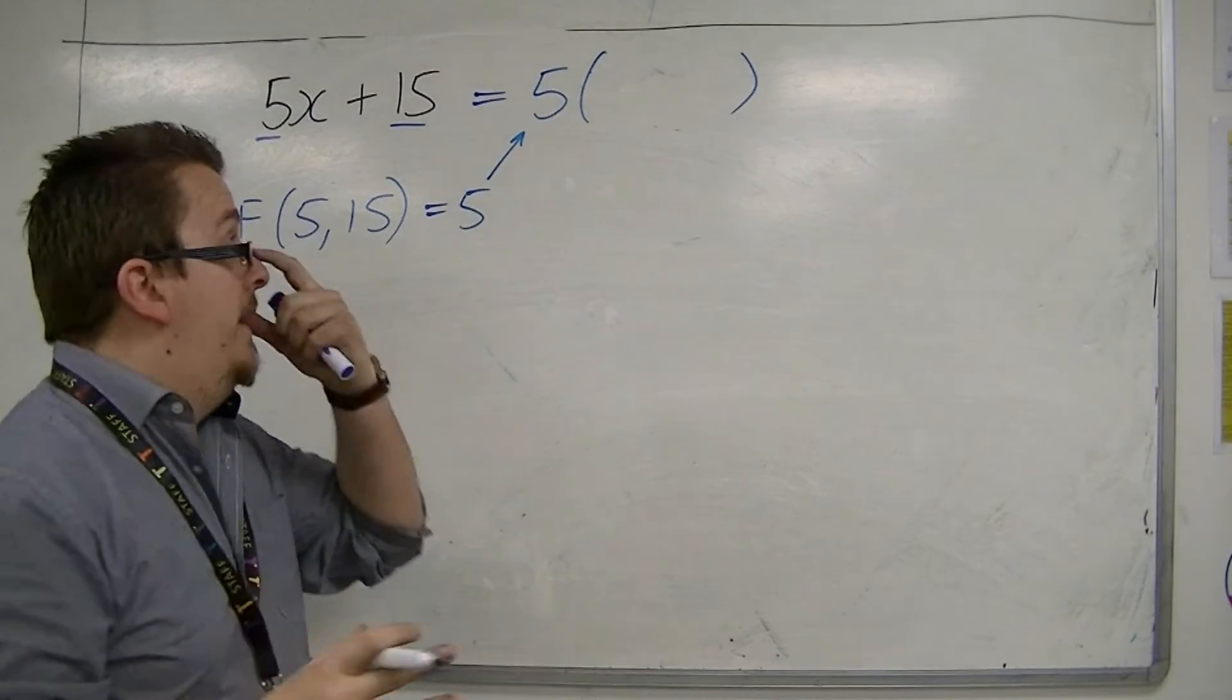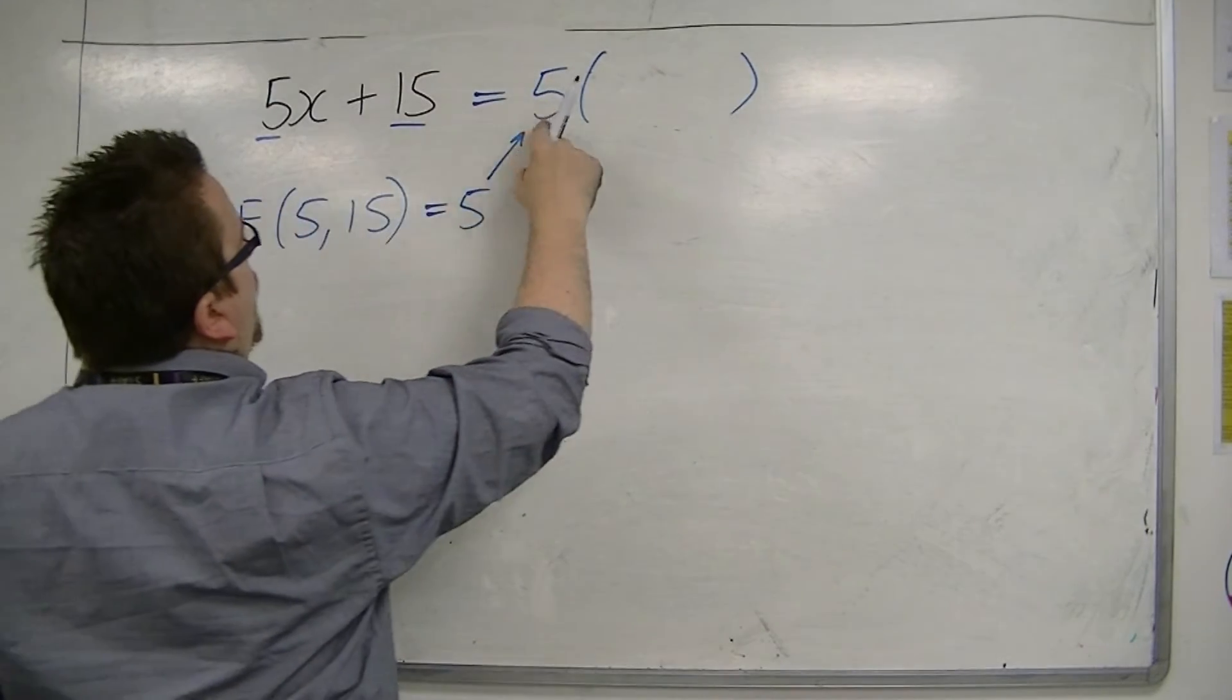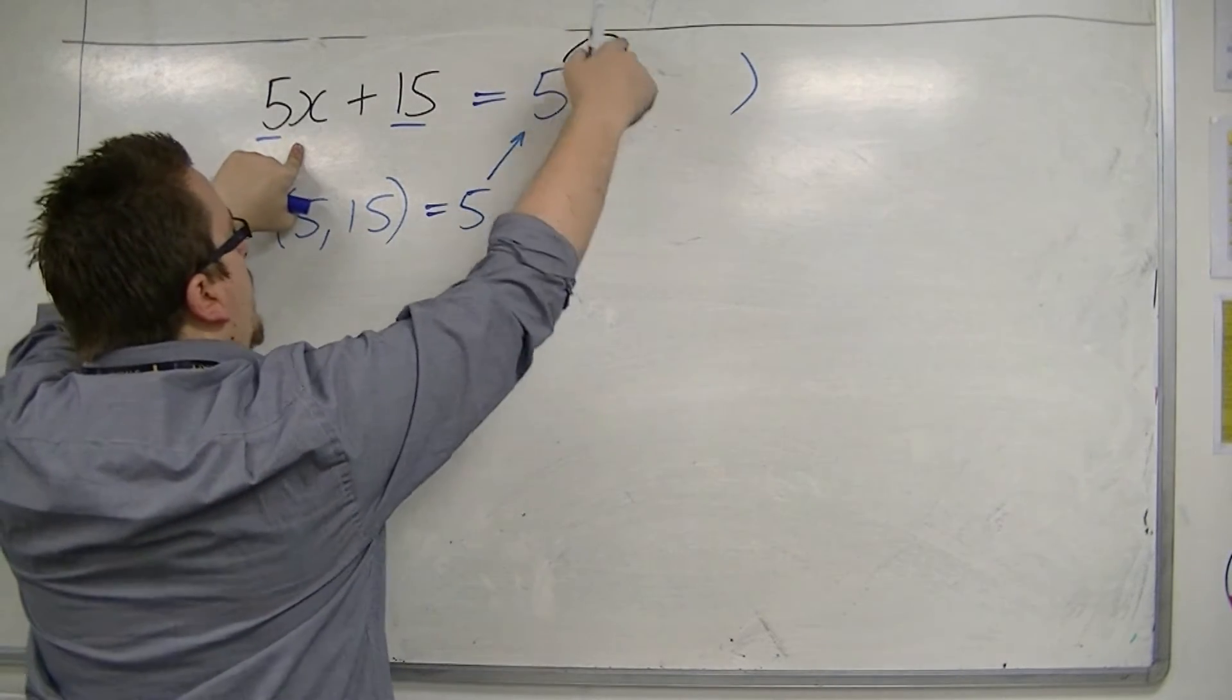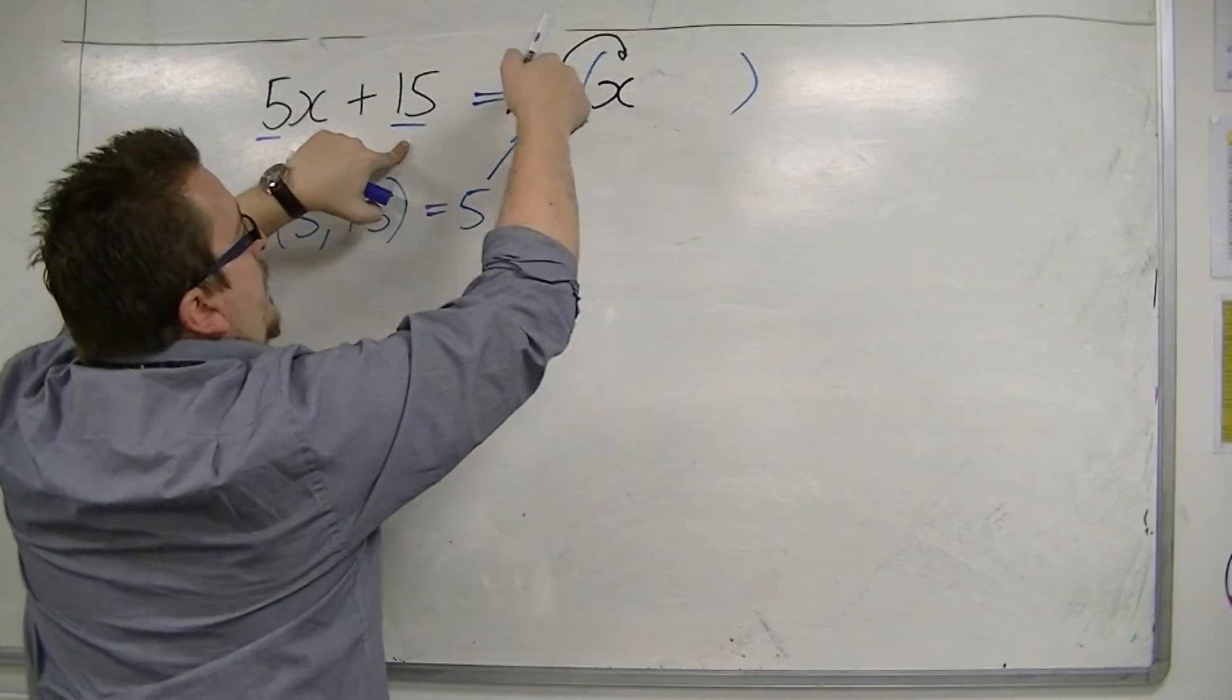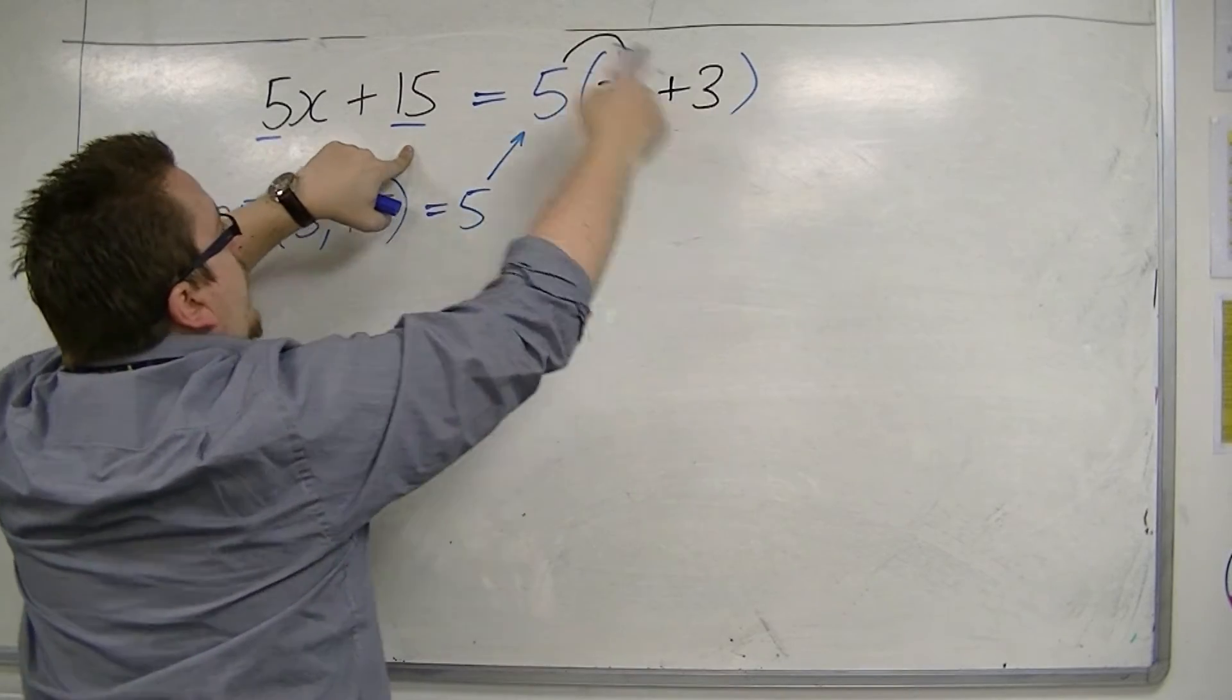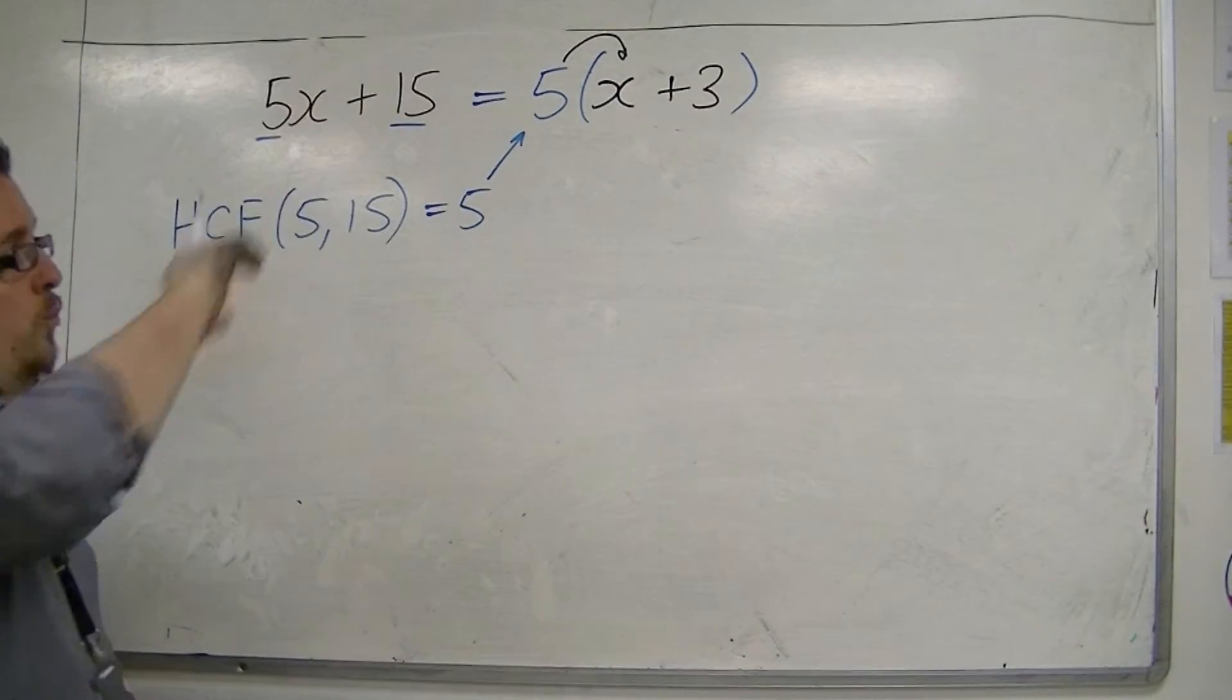And that is the number that will go on the outside of the bracket. Now, subsequently, what we need are two terms that will multiply with the 5 to make these. So, 5 lots of something will make 5x. And the only something that could be is x. 5 times x is 5x. Now, we also want to make 15. So, 5 lots of something must be 15. And the only number that it is is plus 3. 5 lots of 3 is 15. And now it is factorised.